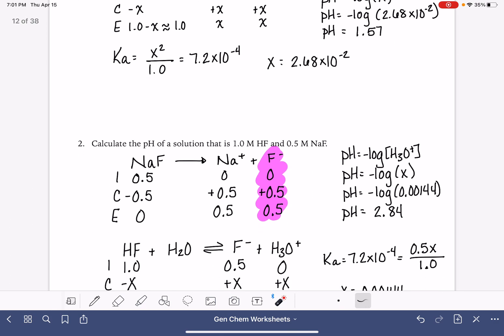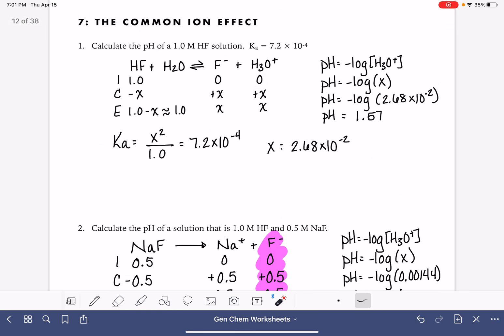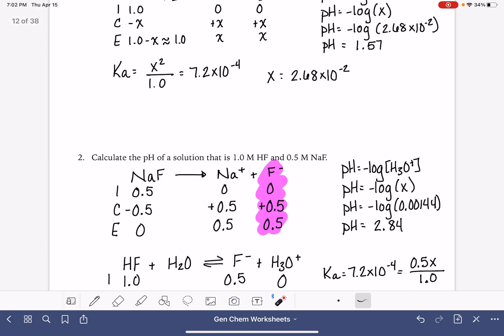And let's think about that in terms of Le Chatelier's principle. Does that make sense? If we think about this as an equilibrium expression, if we add product, such as if we add fluoride, that's going to shift the position of equilibrium to the left, which is going to decrease the F minus. And it's also going to decrease the H3O plus, and that's the really important part. Decreasing the amount of H3O plus causes the solution to be less acidic, which ultimately raises its pH.